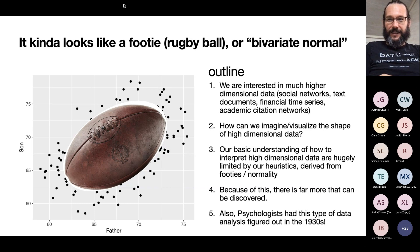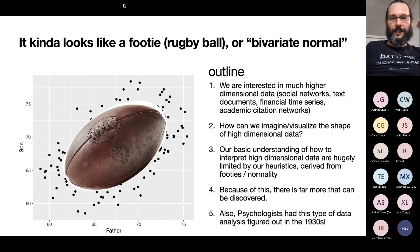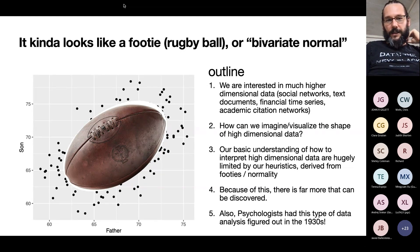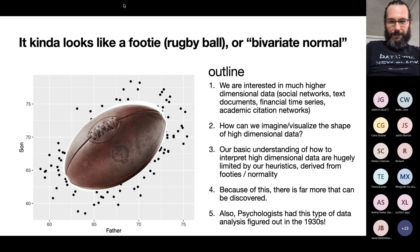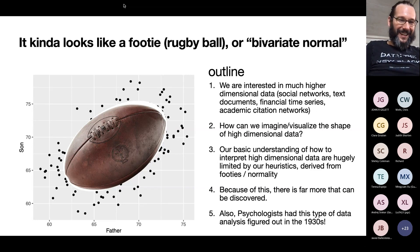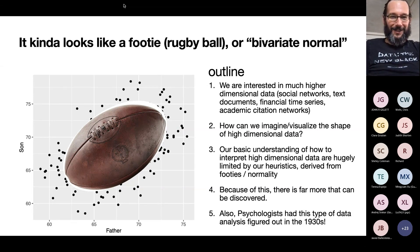In my research I study things like social networks, text documents, financial time series, and academic citation networks. In all of these examples, you have lots of columns of data — not just two, but maybe hundreds, thousands, or millions. We want to think about how we can visualize or imagine the shape of that data. By the end of the talk, I want to convince you that our basic understanding of high-dimensional data is hugely limited by our heuristics about football-shaped Gaussian data.